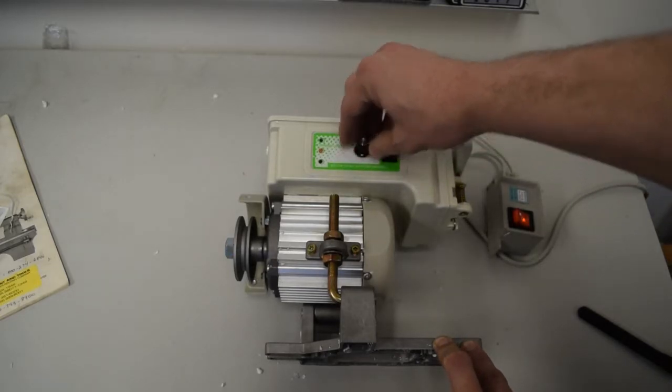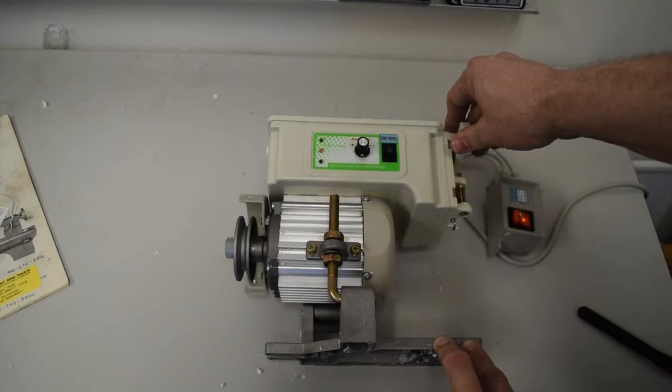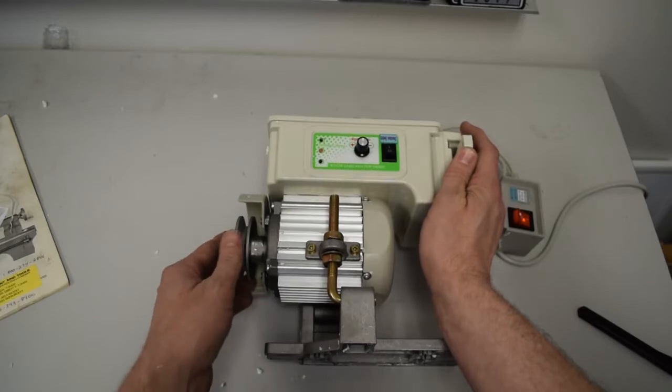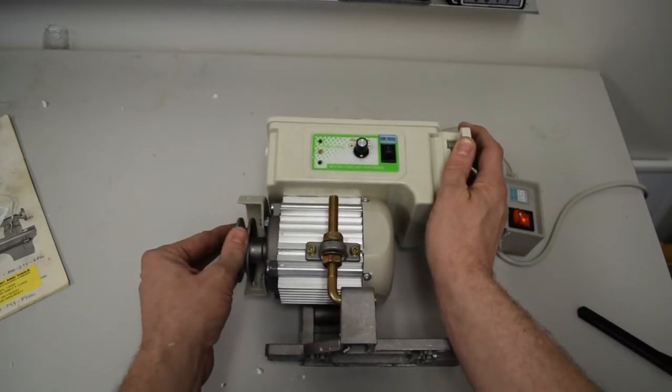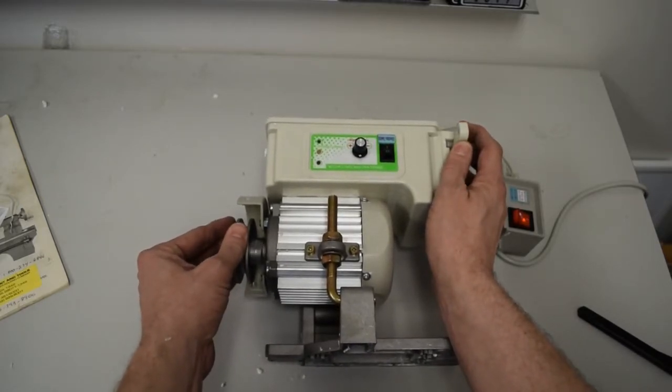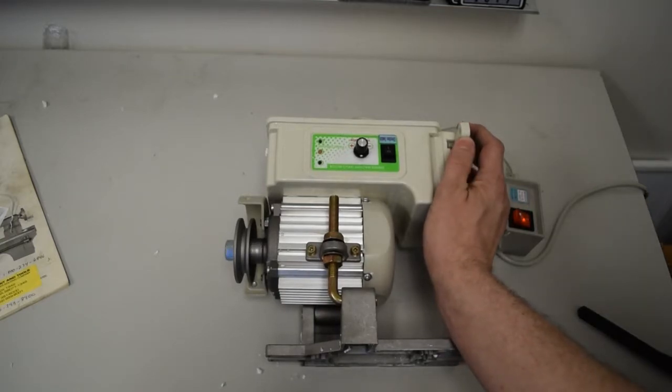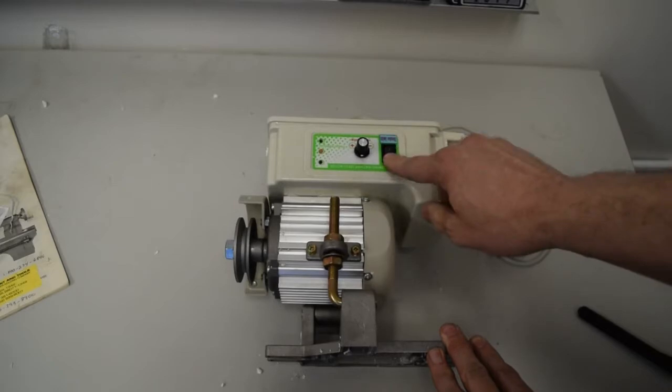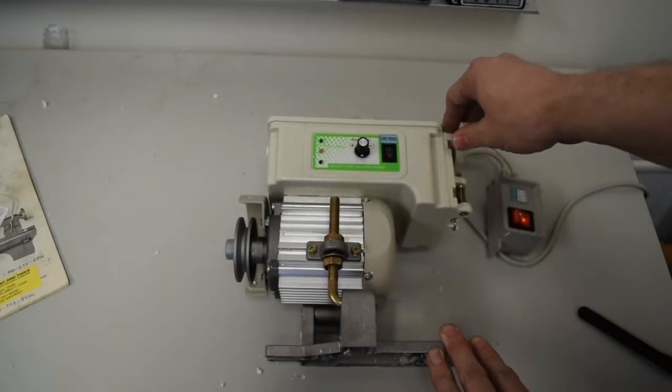And if we set this down low, let's see if I can do this without bumping the camera here. Oh yeah, she's got a lot of torque down low, which will be nice for slow speed milling applications, lathe applications. Reverse this direction here.